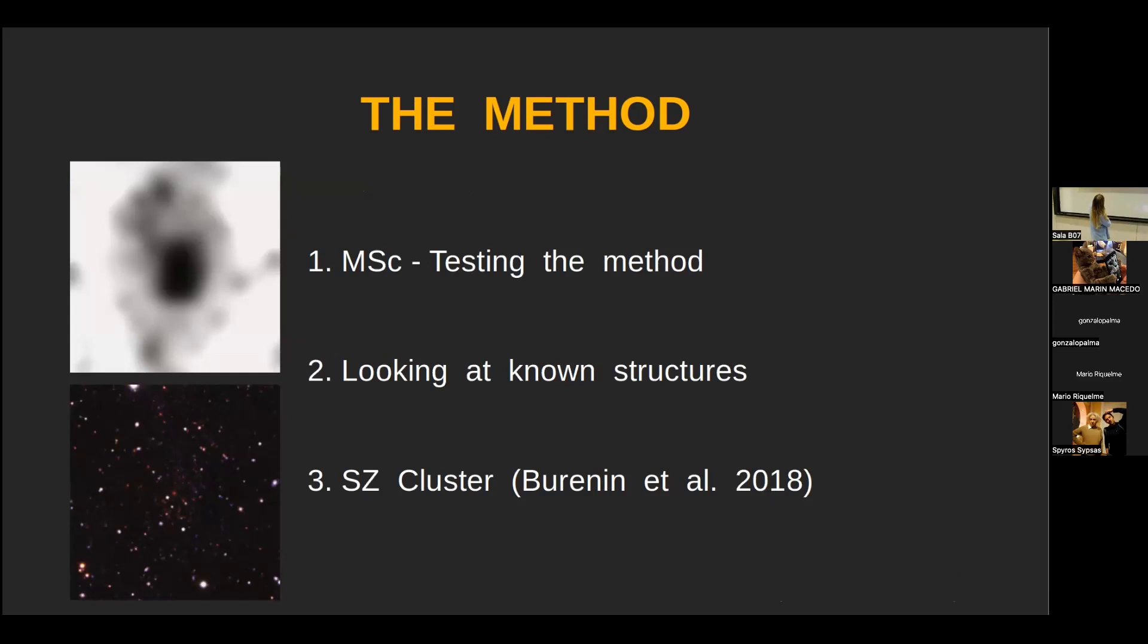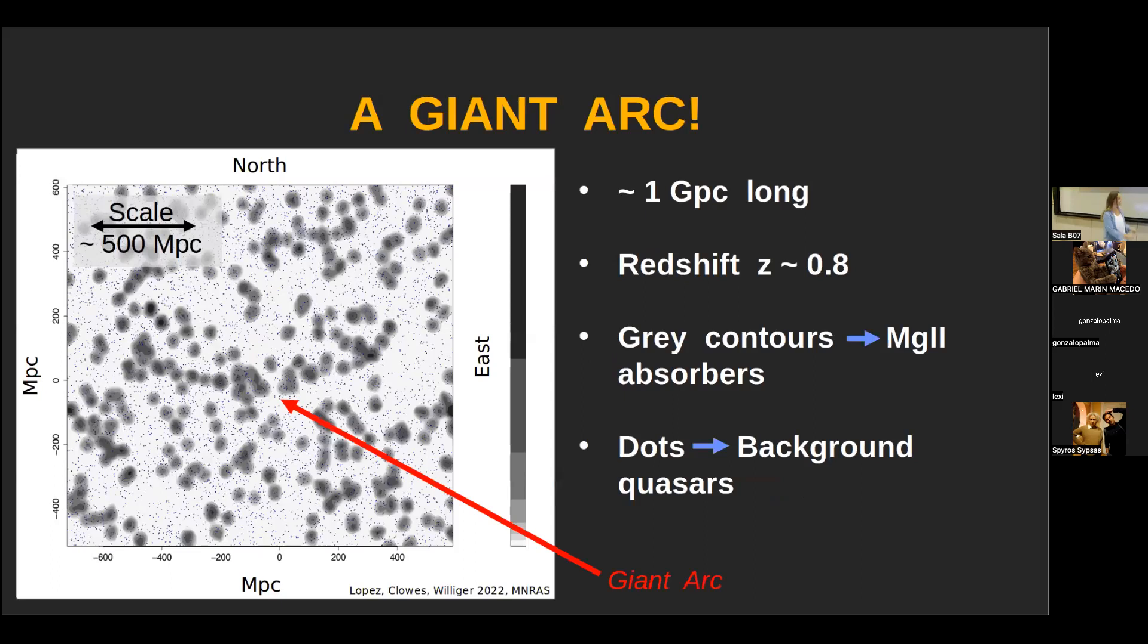So, during my MSc, I began testing this method of using magnesium-two in the spectra of quasars to map the large-scale structure. What I did was I looked at already known and documented structures and clusters and mapped them in their magnesium-two to see what they look like. In particular, at one point, I was looking at just a small SDSS cluster, and when I plotted this in the magnesium-two, there was this really intriguing dense band of magnesium-two absorbers just running across. But the field of view cut this off. So I investigated a little bit further. I increased the field of view. And then I serendipitously found the giant arc.